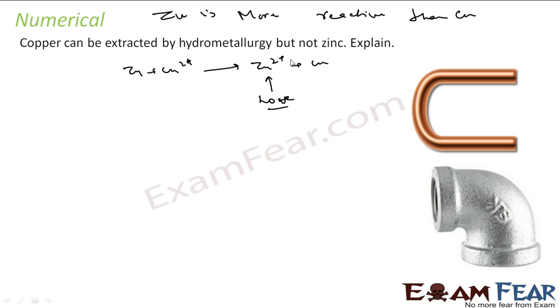Now to displace zinc, a more reactive metal will be required. So if you want to make Zn 2+ to zinc, I need some metal and this metal has to be more reactive, correct? Because a more reactive metal will displace any metal oxide or sulfide to metal. So if you want to displace zinc from Zn 2+ to zinc, you need a more reactive metal.